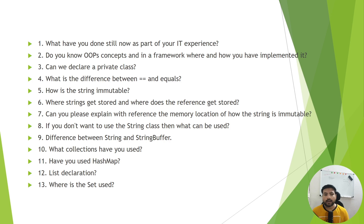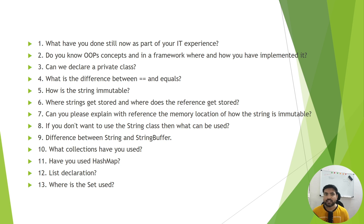Where does the String get stored and where does the reference get stored? That's a very good question about sorting by reference versus sorting by value. Can you explain with reference to the memory location of how String is immutable? Whenever you change anything in a String, the new object is at a different location in heap memory, and the initial string address is different from the changed string's address — so you have two different addresses.